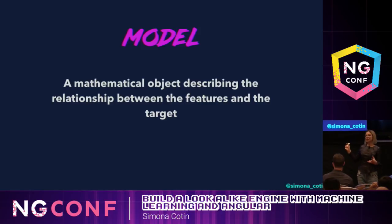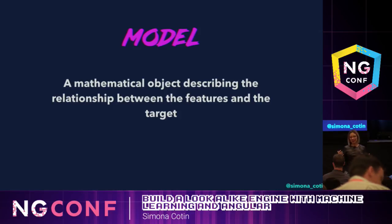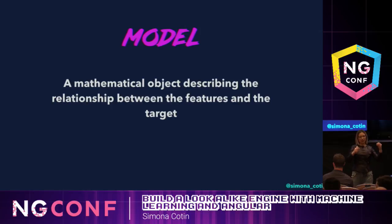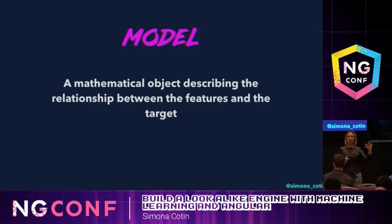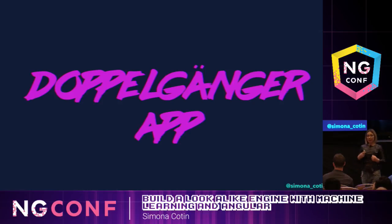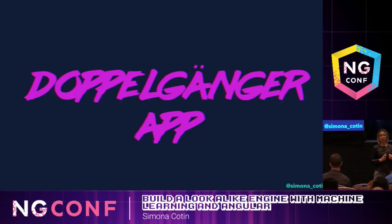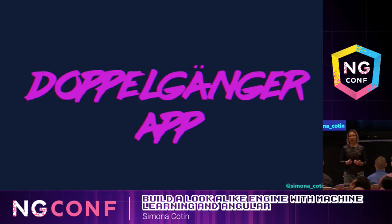So this is a very strict definition of what a model is. But really what it is, it's a mathematical function that describes the relationship between the input features of our input and the output — what we're expecting it to be. Coming back to our doppelganger app, there are three steps that help us take our app further.